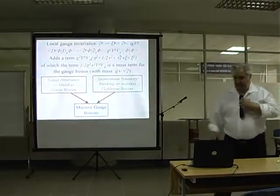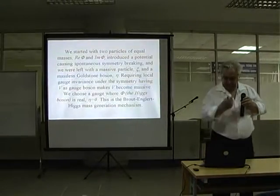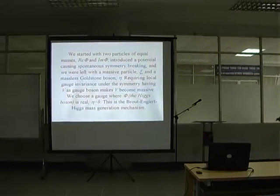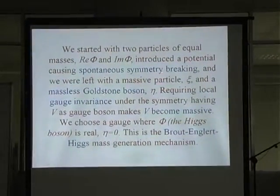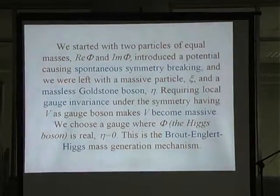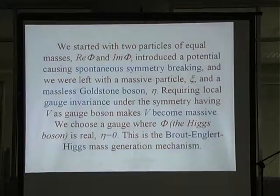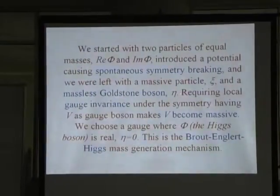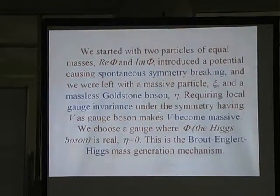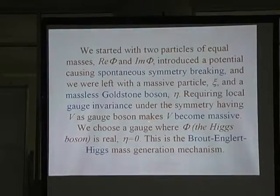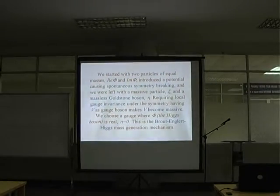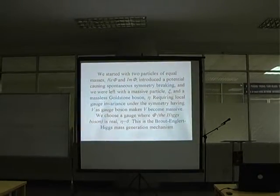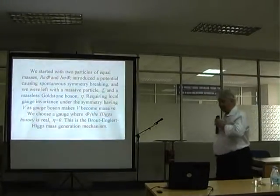Gauge invariance gives you massless gauge bosons. Spontaneous symmetry breaking gives you massless Goldstone bosons. But the two together give you massive gauge bosons — that's the Higgs mechanism. In summary: starting with two particles of equal mass, introducing a potential causing spontaneous symmetry breaking, we are left with a massive particle ξ and the massless Goldstone boson η. Imposing local gauge invariance makes the vector boson V massive. We choose a gauge where η = 0 — that's the Brout-Englert-Higgs mass generation mechanism.